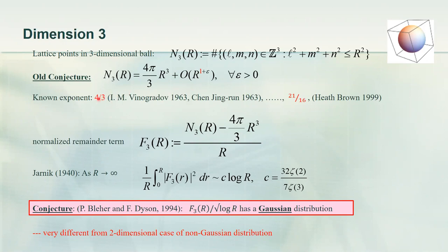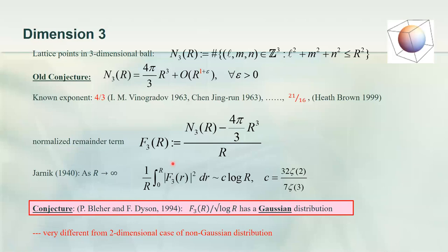Analogous to the two-thirds exponent in 2D, there's a four-thirds exponent in 3D. The ball problem is actually quite difficult — still not known. The world record as far as I know is due to Heath-Brown, giving some number bigger than one but less than four-thirds. When you look at the normalized remainder term for the 3D ball, already in 1940 Jarník computed the mean square of this normalized remainder term and showed that it blows up — the mean square is asymptotic to a multiple of log of the radius.